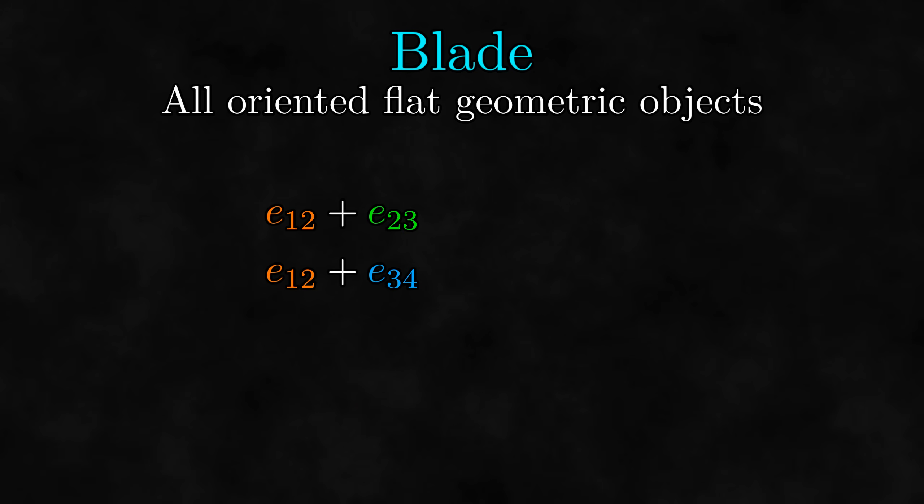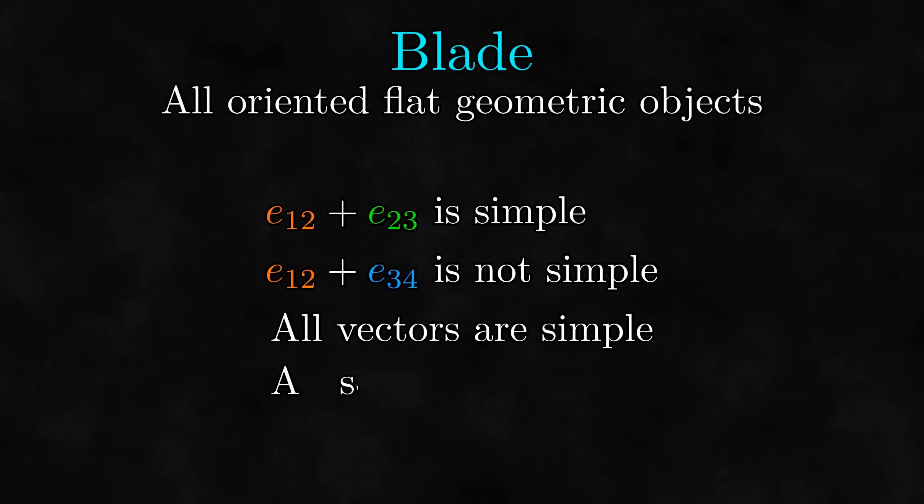So a bivector like E12 plus E23 is simple, but E12 plus E34 is not simple. And like with the blade terminology, we say that all vectors and all scalars are simple.